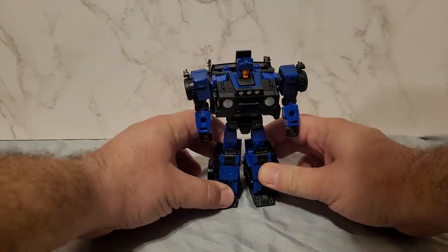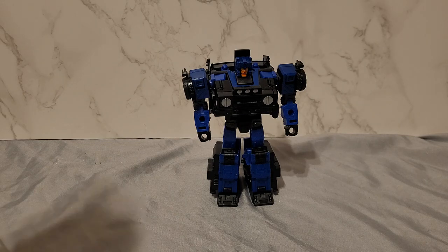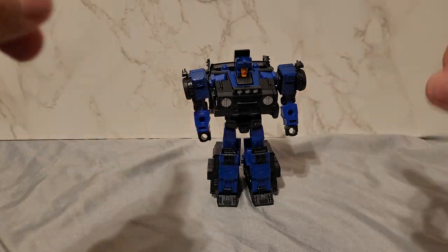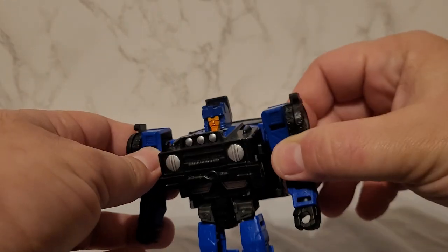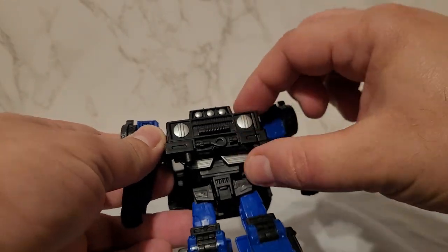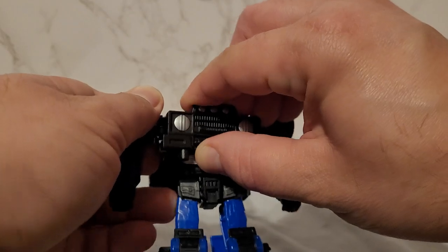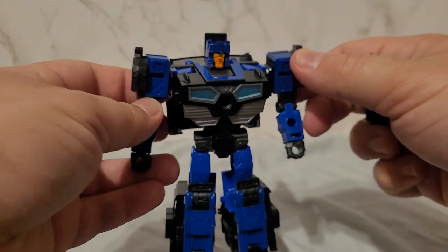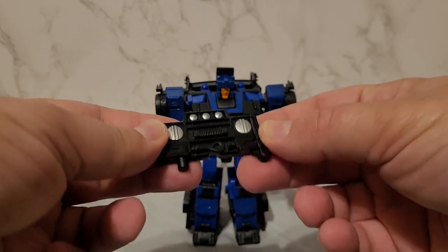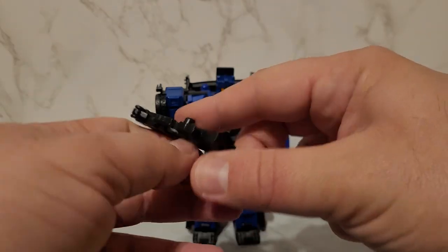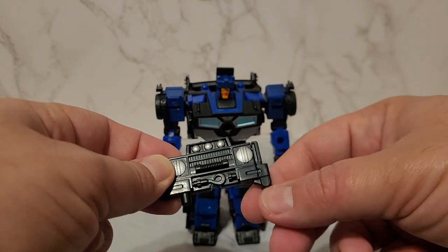There we have Crankcase in his robot mode. Not entirely though. There's actually one extra step. This front piece, the front of the car, actually pops off to reveal his actual chest. This right here is his other weapon accessory. Even though it's the front grill of a car, if you fold this down it becomes a blaster.